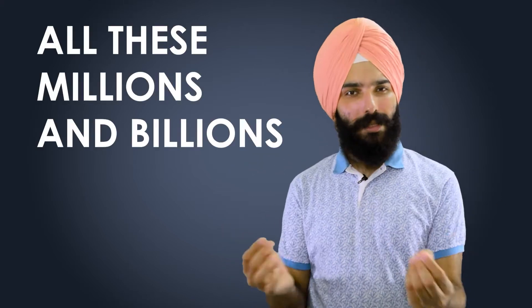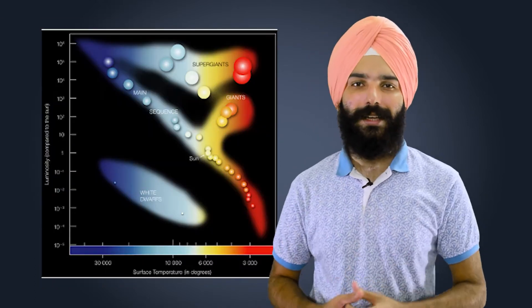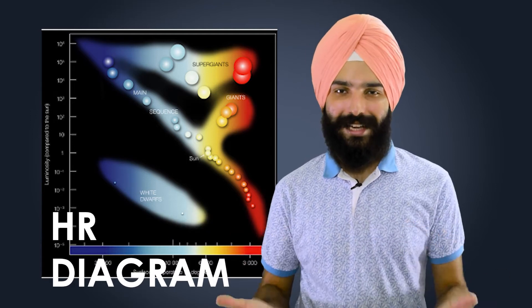So today we're going to understand how we have managed to put all these millions and billions of stars out there in space into this beautiful looking diagram. It is called the Hertzsprung-Russell diagram, or famously the HR diagram.